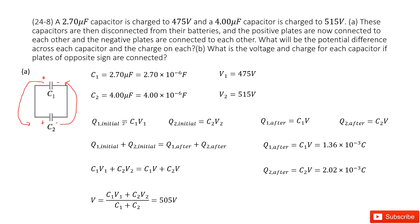The charge Q1 initial is C1 times V1. The charge Q2 initial is C2 times V2. This is the initial situation. Finally, these two capacitors are connected, so we make the potential difference for both C1 and C2 equal to V.